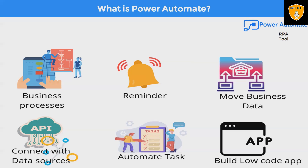Here are a few examples of what we can do with Power Automate for business process automation. We can send automatic reminders for past-due tasks. We can connect more than 500 data sources or any publicly available API. We can move business data between systems on a schedule. Power Automate can also be used to automate tasks on local computers like computing data in Excel, by recording mouse clicks, keystrokes, and copy-paste steps from our desktop. We can also build low-code apps for our actual workflows.